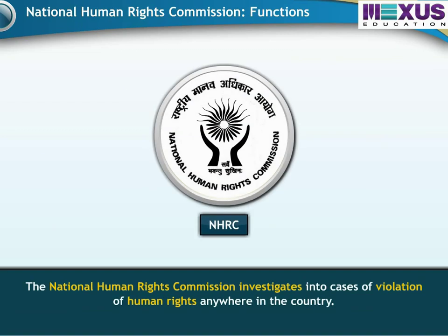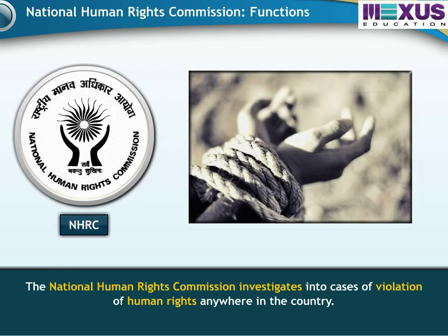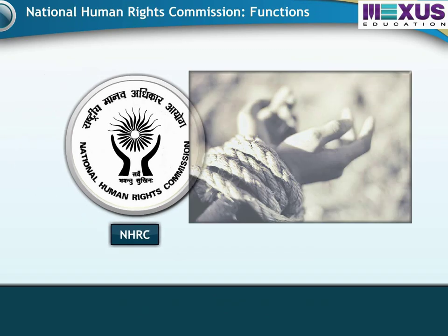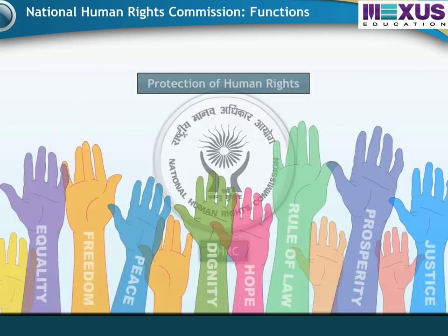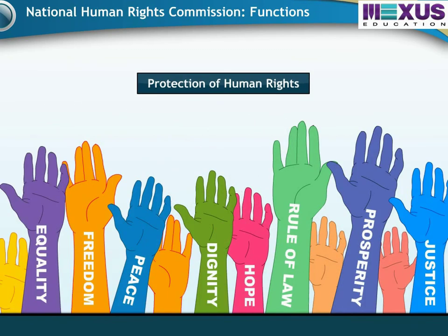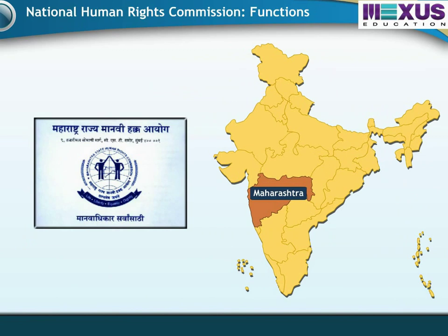The National Human Rights Commission primarily investigates cases of violation of human rights anywhere in the country. The important function of this commission is the protection of human rights. The state of Maharashtra has also established a human rights commission.